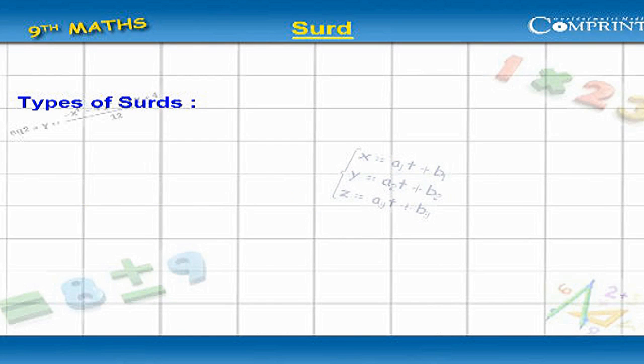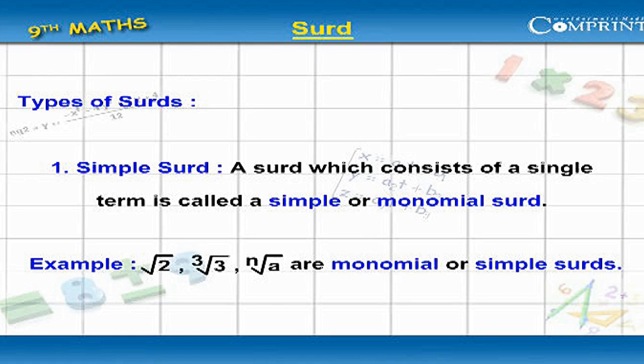Types of surds: Simple surd - A surd which consists of a single term is called a simple or monomial surd. Example: root 2, cube root 3, nth root a are monomial or simple surds.